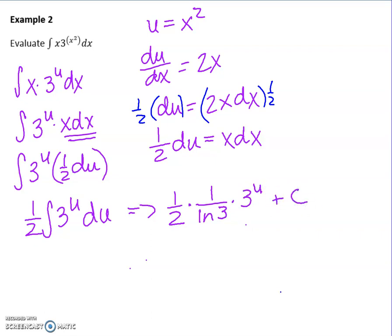Now there's a little bit we can do, obviously we need to plug back in the u. So I've got 3 to the x squared, all over 2 ln 3 plus c. But I can actually, you should remember your properties of logs, which say if you have a coefficient on your log, that can become a power on the inside.